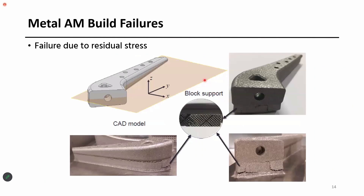Another example here — we can see it's some kind of medical part, I think a hip implant. As we can see, there is some kind of cracking. A different kind of support structure is used on the base. These failure images are from the initial stage when they were trying out metal 3D printing.